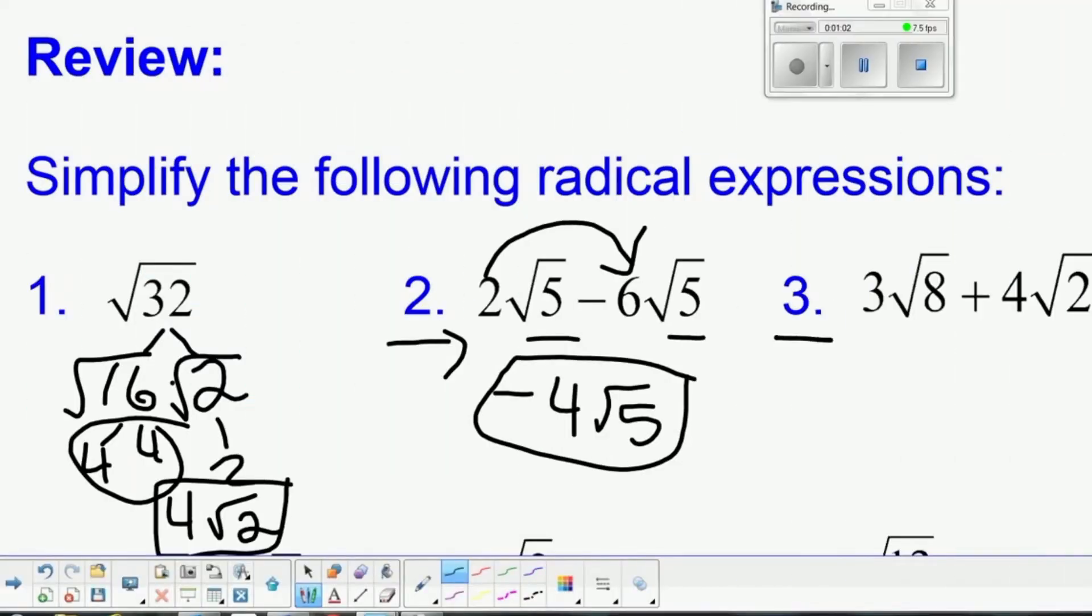So this number 3, we want to add those, but we can't add those because they are unlike radicands. But we can simplify this first one.